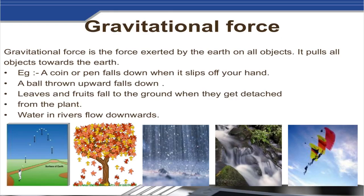Due to gravitational force, a ball thrown upward falls down. Leaves and fruit fall to the ground when they get detached from the plant. Water in a river flows downward. Everything moves toward the ground due to gravitational force, as you can see and learn through the pictures shown here.